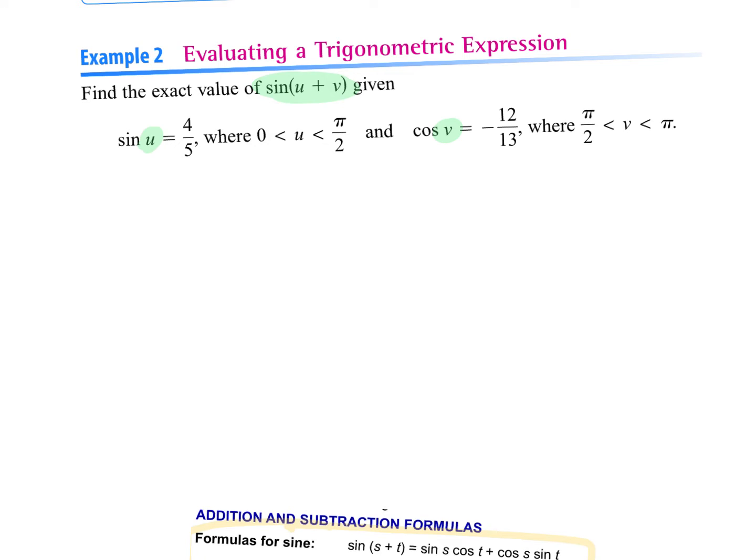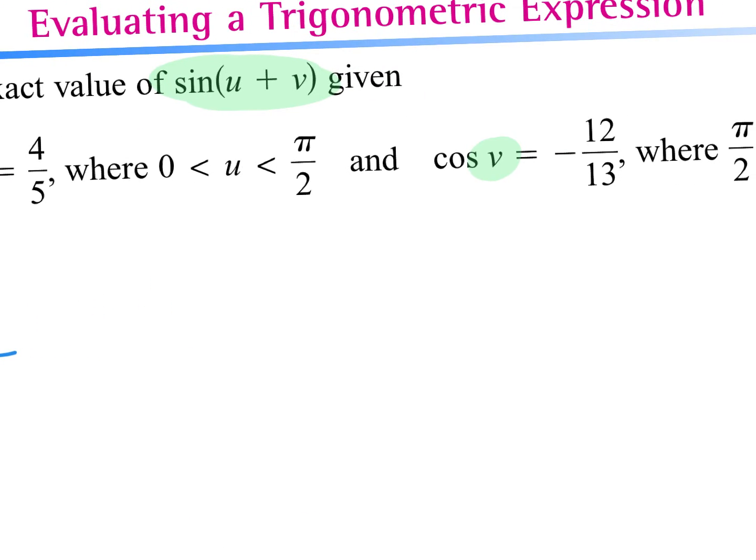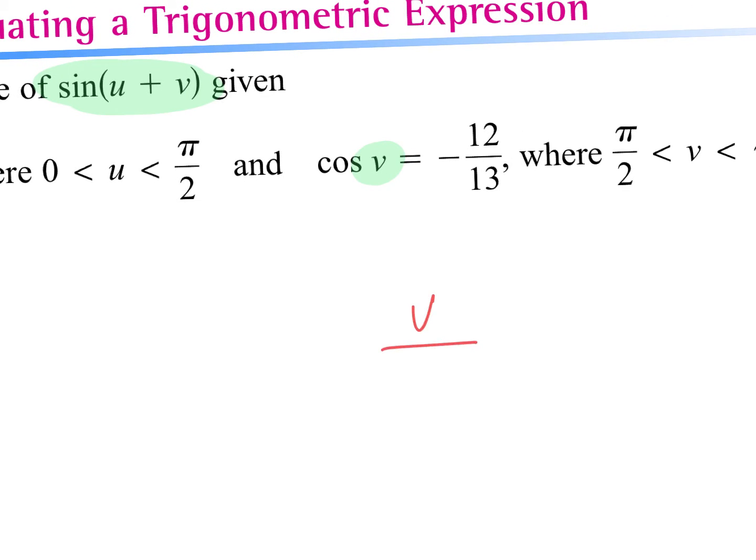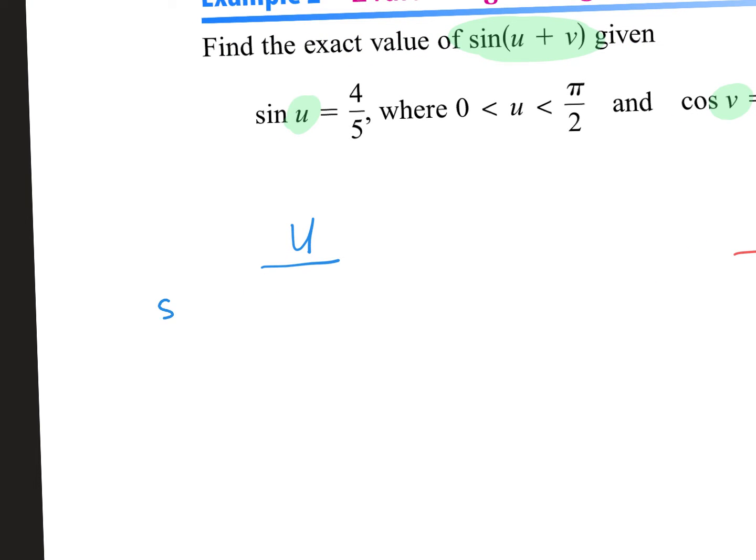This is a different way to ask how to find the exact value of one of our sum and difference formulas. They told me information about two triangles. So I'm going to write down triangle U over here and over here I'm going to write down triangle V. I have two different triangles. If they give me X, Y, and R, or if they give me two of them, we find the third one.